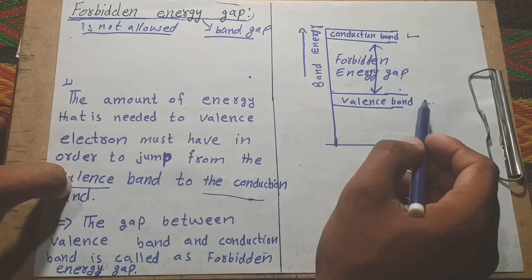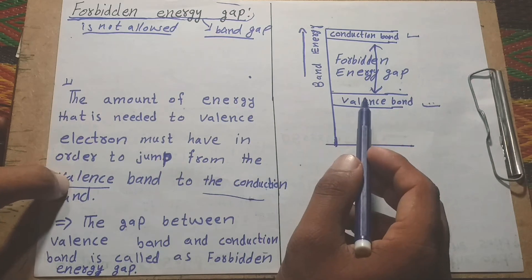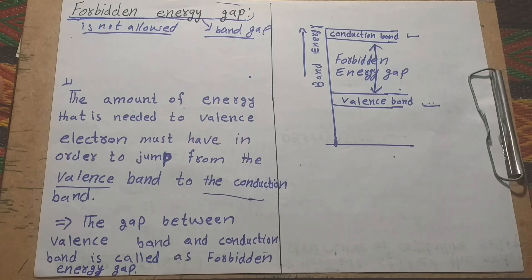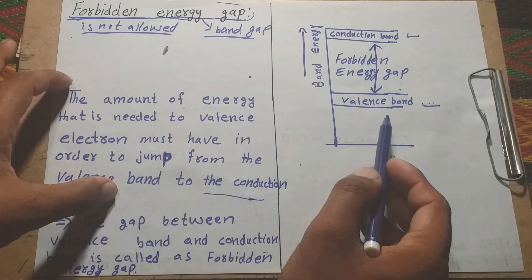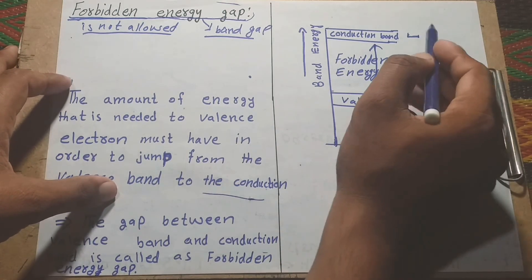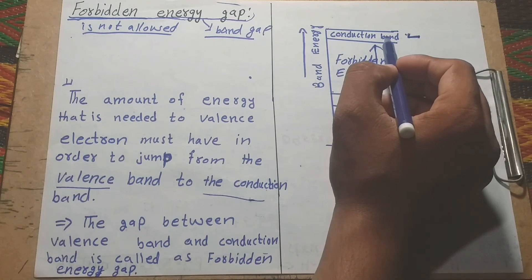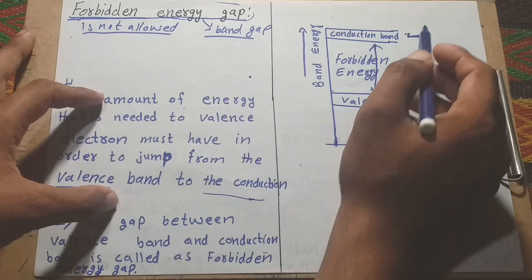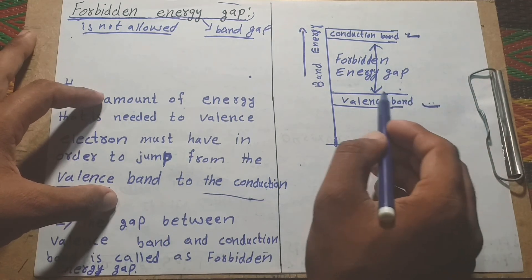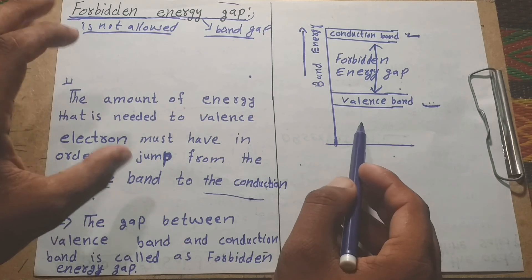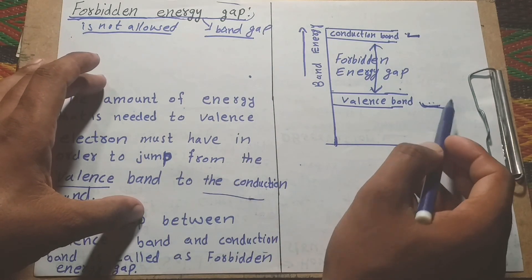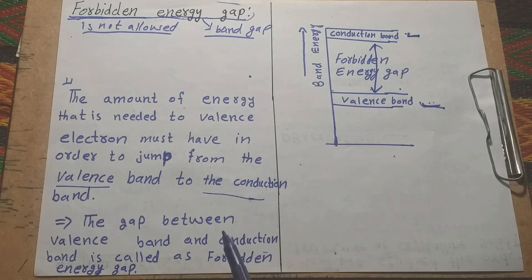For example, this is the conduction band and this is the valence band. I already made a detailed video on conduction band and valence band — check the playlist. Here we only study the concept. The conduction band is empty of electrons, while the valence band is filled with electrons. The gap between the valence band and conduction band is called the forbidden energy gap.